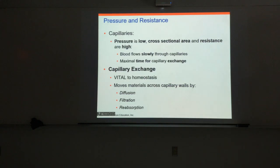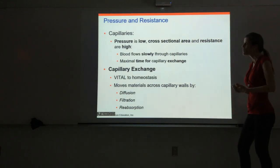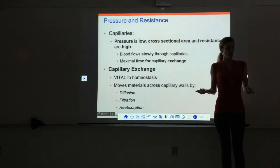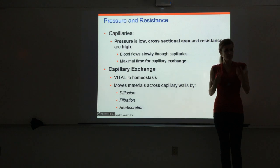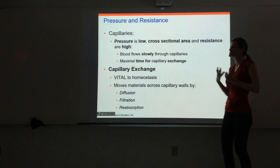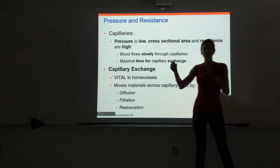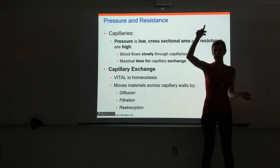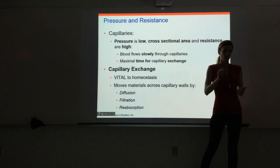Finally we get to capillary pressure. We talked about pressure in the arteries — systolic, diastolic, hypertension, hypotension — and pressure in the veins, which is pretty low but we have ways to help blood get back to the heart. Now we'll talk about the capillaries. Pressure is relatively low here. Pressure is highest in the elastic arteries right by the heart, and then it decreases all the way through the system, lowest in the vena cava right before we get back to the heart.